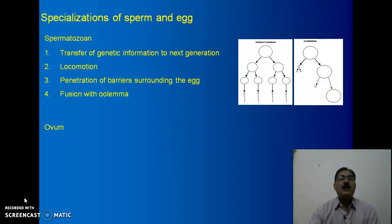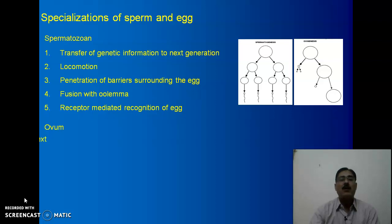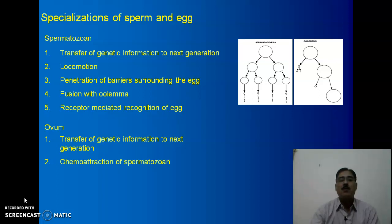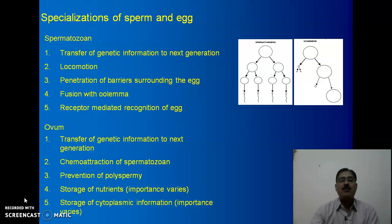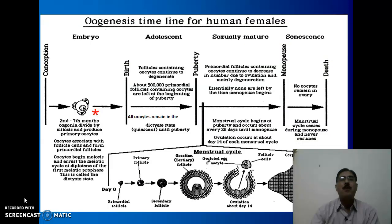The basic characteristic features of spermatogenesis are: transfer of genetic information to the next generation, locomotion, penetration of barriers surrounding the egg, fusion with the ovum, and receptor-mediated recognition. While the oocyte is responsible for transfer of genetic information to the next generation, chemotactic attraction of the sperm, prevention of polyspermy, storage of nutrients, and storage of cytoplasmic determinants. This general figure shows oogenesis in the human female.